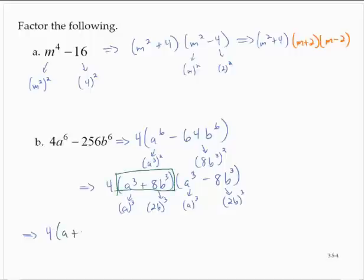So that would be a plus 2b times a square minus 2ab plus 4b square. And I missed an a here. That would be 2ab is the middle term in the trinomial.